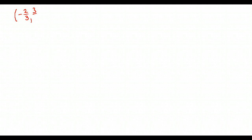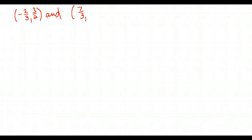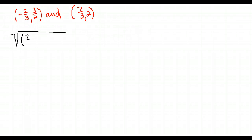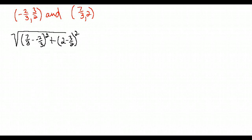Now let's do one with fractions so you can see how that works. Our points are (-2/3, 3/2) and (7/3, 2). Fractions can be a headache, but they're doable. For distance, we take the square root of the x values subtracted: seven thirds minus negative two thirds, squared, plus the y values subtracted: two minus three halves, squared.